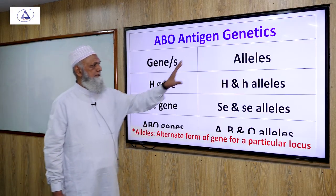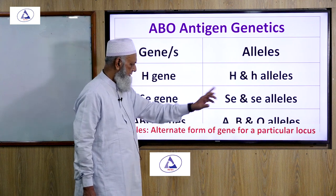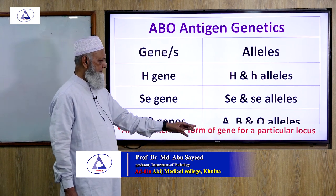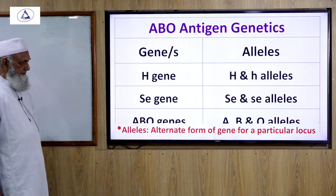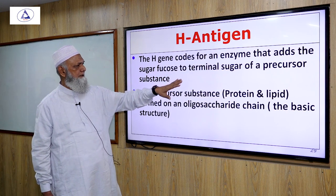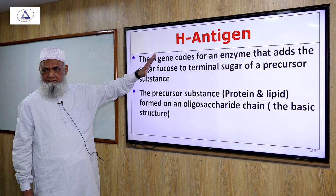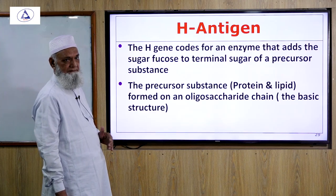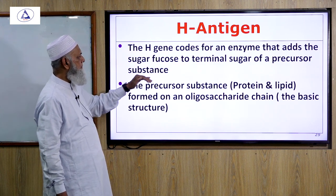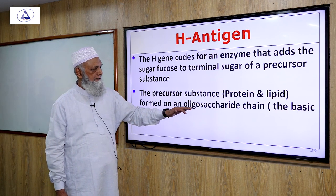The alleles for each gene are as follows: H gene has H and h alleles; Se (AC) gene has Se and se alleles; ABO gene has A, B, and O alleles. An allele is an alternate form of a gene for a particular locus. Regarding H antigen: the H gene codes for an enzyme that adds the sugar fucose to the terminal sugar of a precursor substance. The precursor substance is a protein that forms part of an oligosaccharide chain — the basic structure.